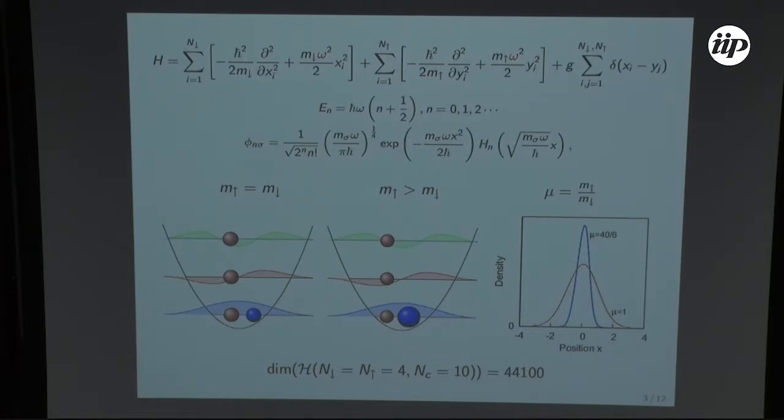However this is fully quantum so the dimensionality of the Hilbert space grows exponentially so even for four particles of each type and taking account only ten single particle levels the Hamiltonian is pretty big and it grows even more if you would like to calculate more.